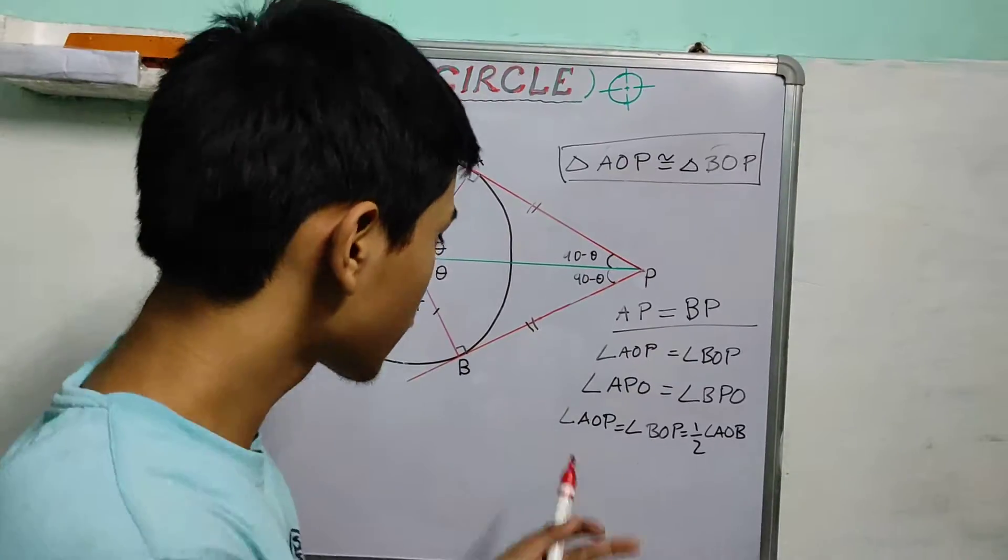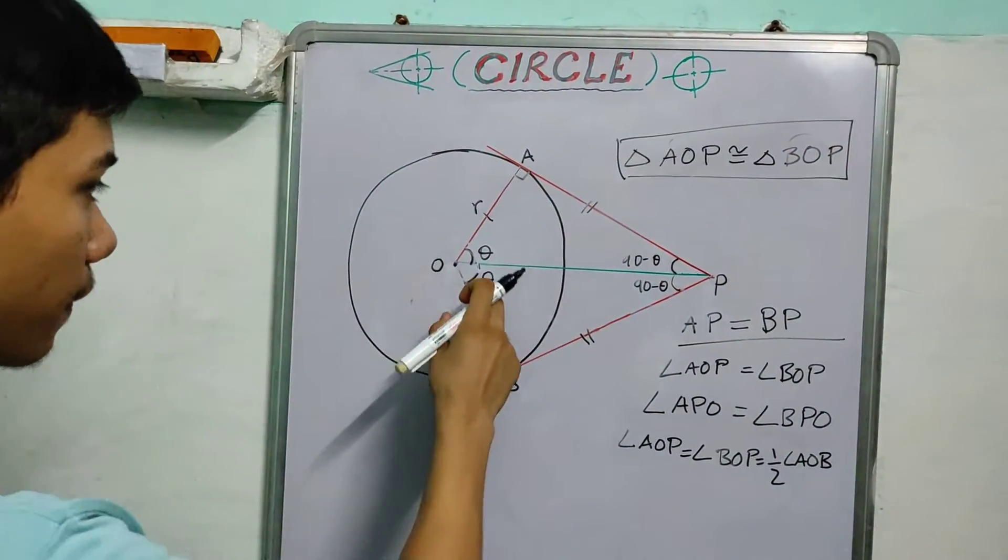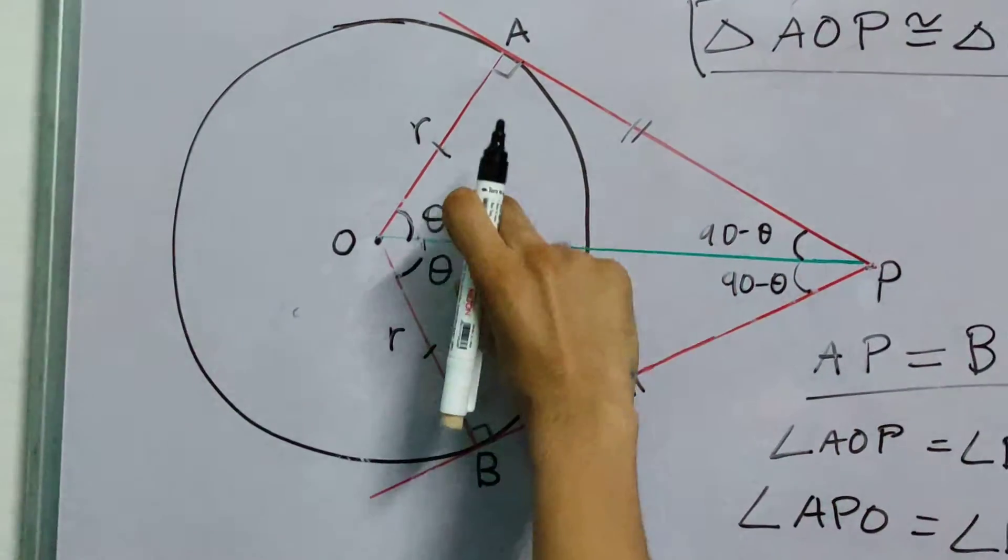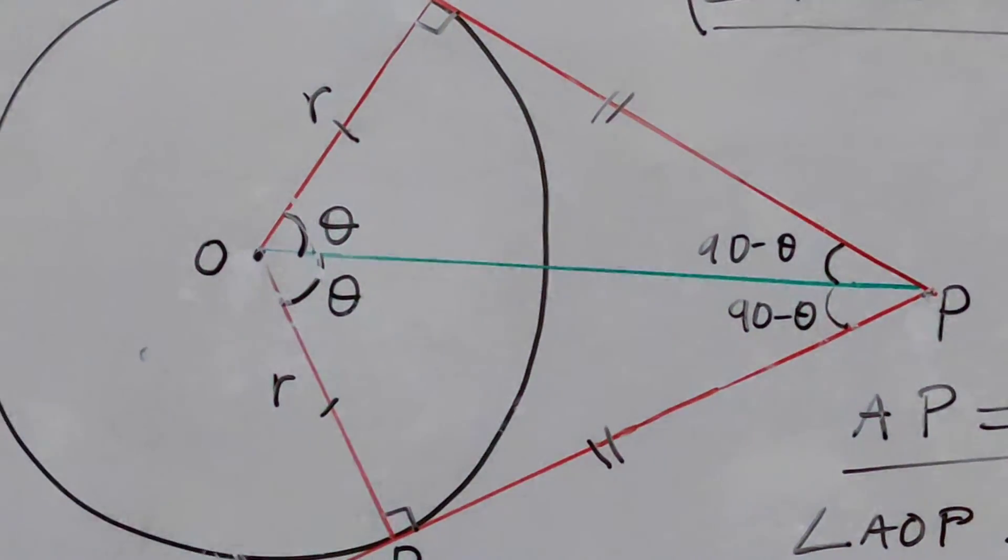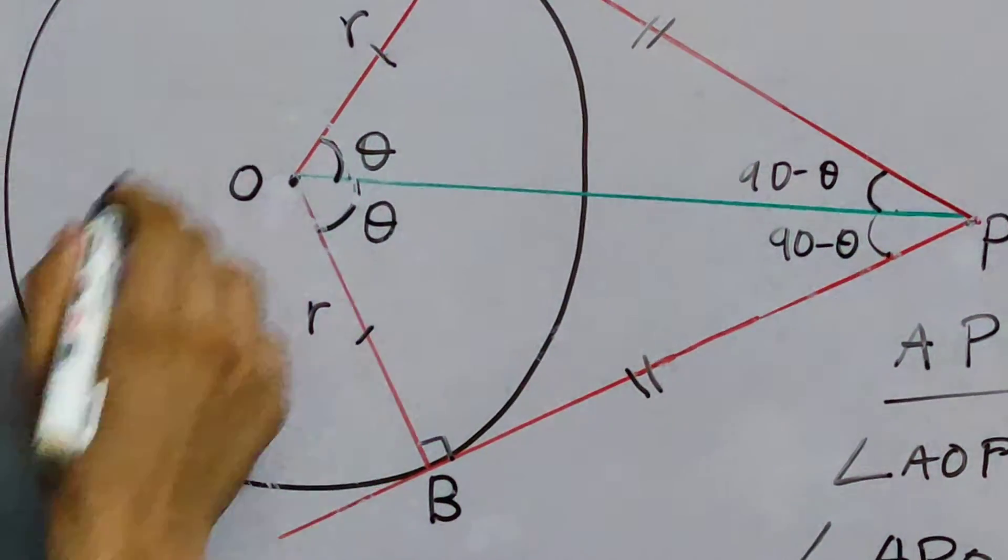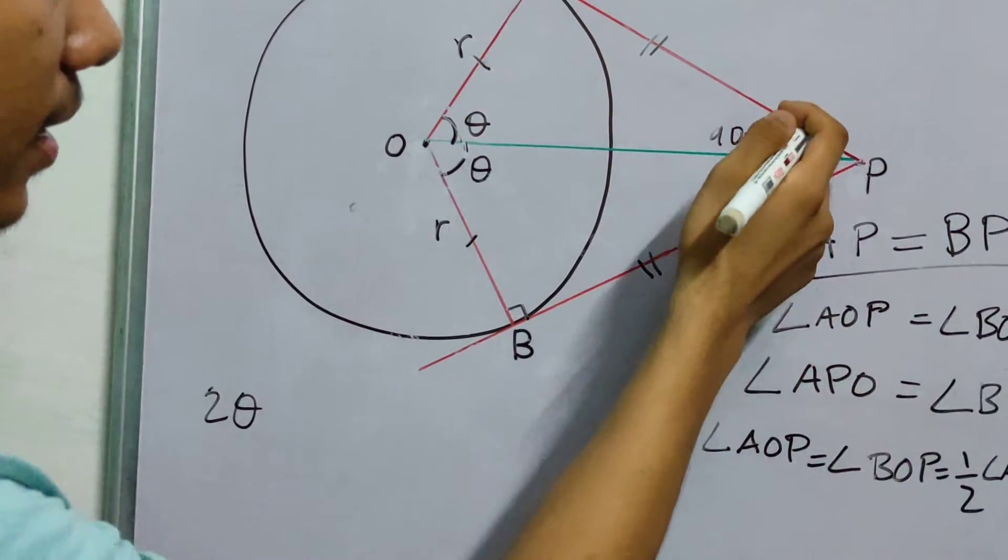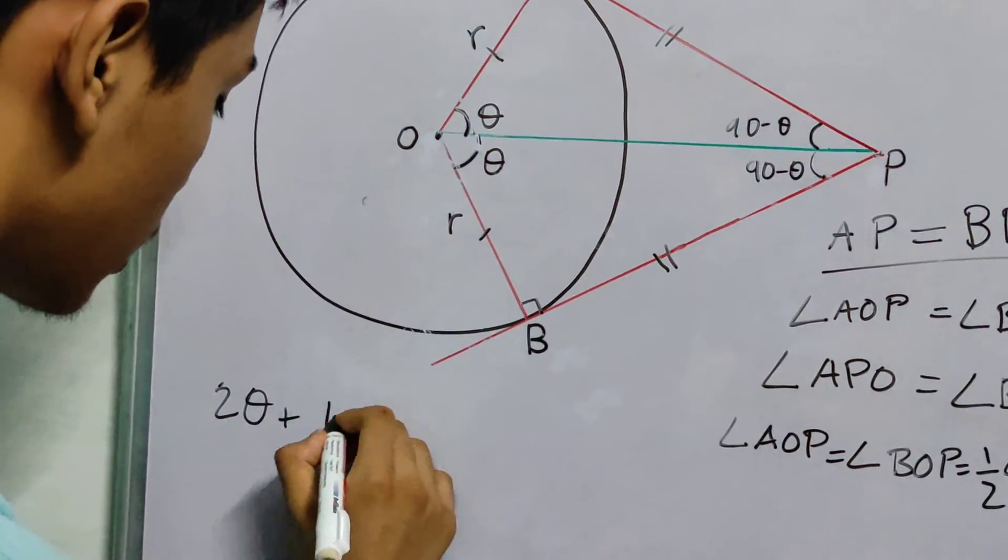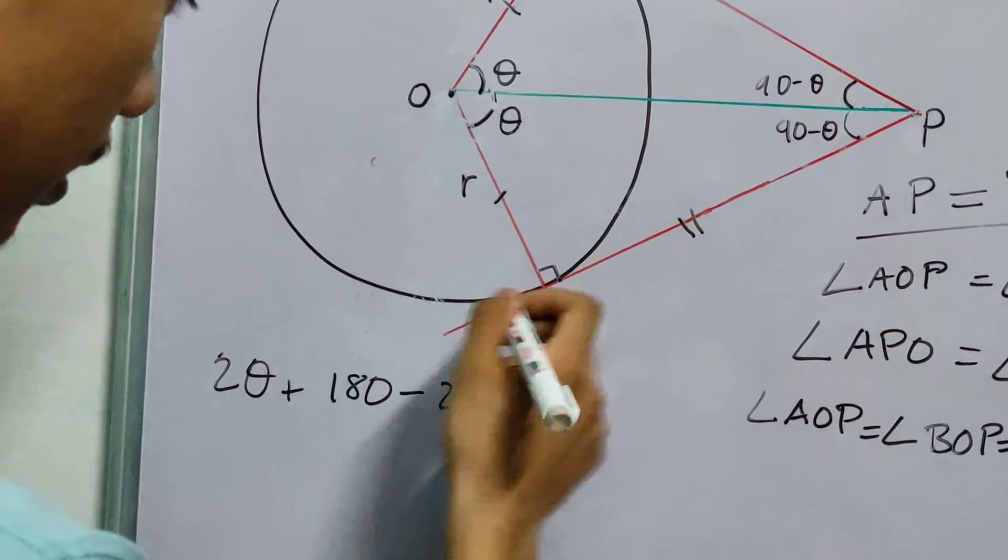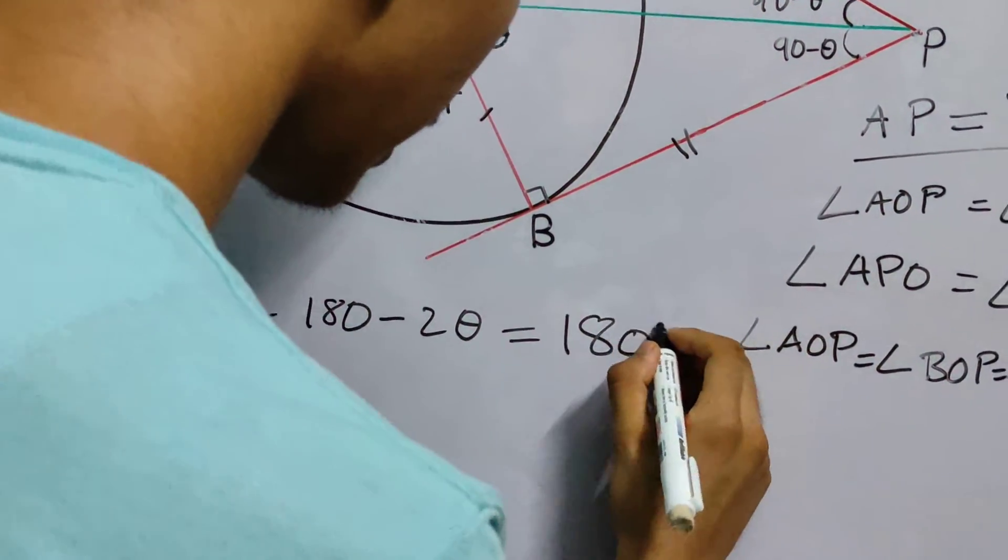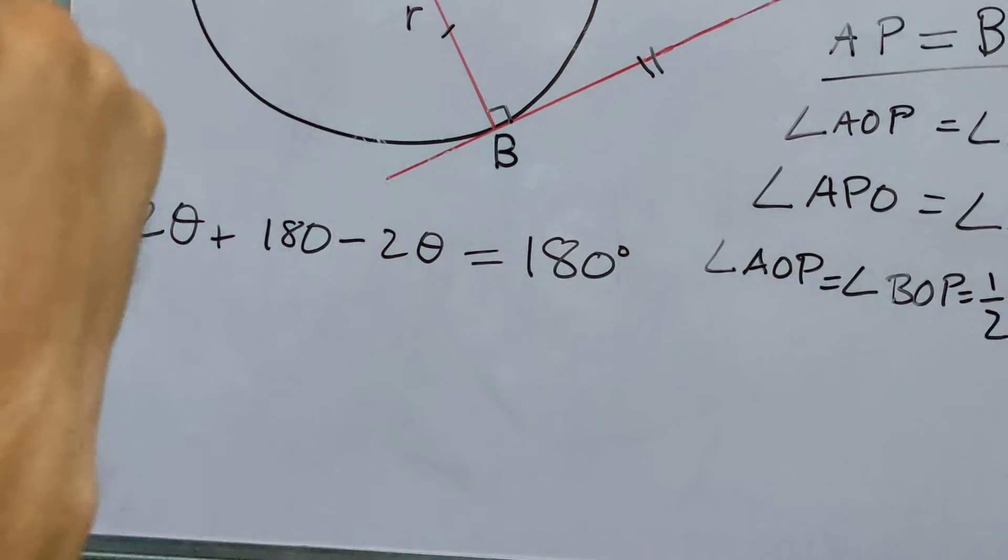Now, this was easy. This was trivial. Now, notice this thing. If I add these two, if I add all these four angles up, what do we get? See, this is theta plus theta. We get 2 theta. 90 minus theta plus 90 minus theta. So we get plus 180 minus 2 theta which is 180 degrees. What does this tell us? Think about this.